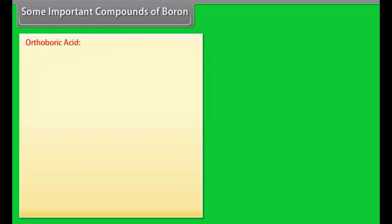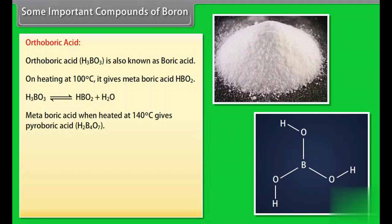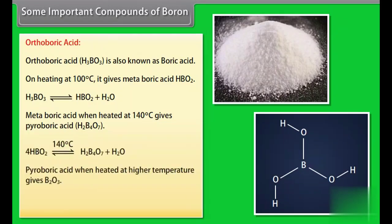Orthoboric acid. Orthoboric acid H3BO3 is also known as boric acid. On heating at 100 degree Celsius it gives metaboric acid HBO2. Metaboric acid when heated at 140 degree Celsius gives pyroboric acid H2B4O7, which when heated at high temperature gives B2O3.